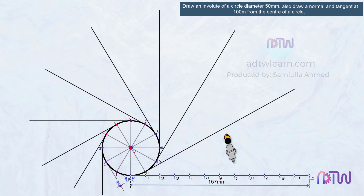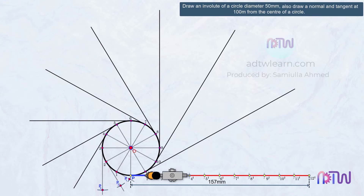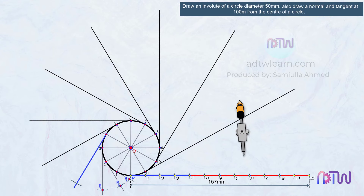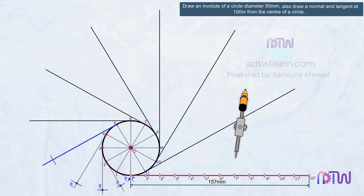Similarly, take the distance between point 3' to P and using point 3 as a reference, mark an arc on this line — name this point as P3. Next, take the distance between point 4' to P and using point 4 as a reference, mark an arc on this line — name this point as P4. Next, take the distance between point 5' to P and using point 5 as a reference, mark an arc — name this point as P5.